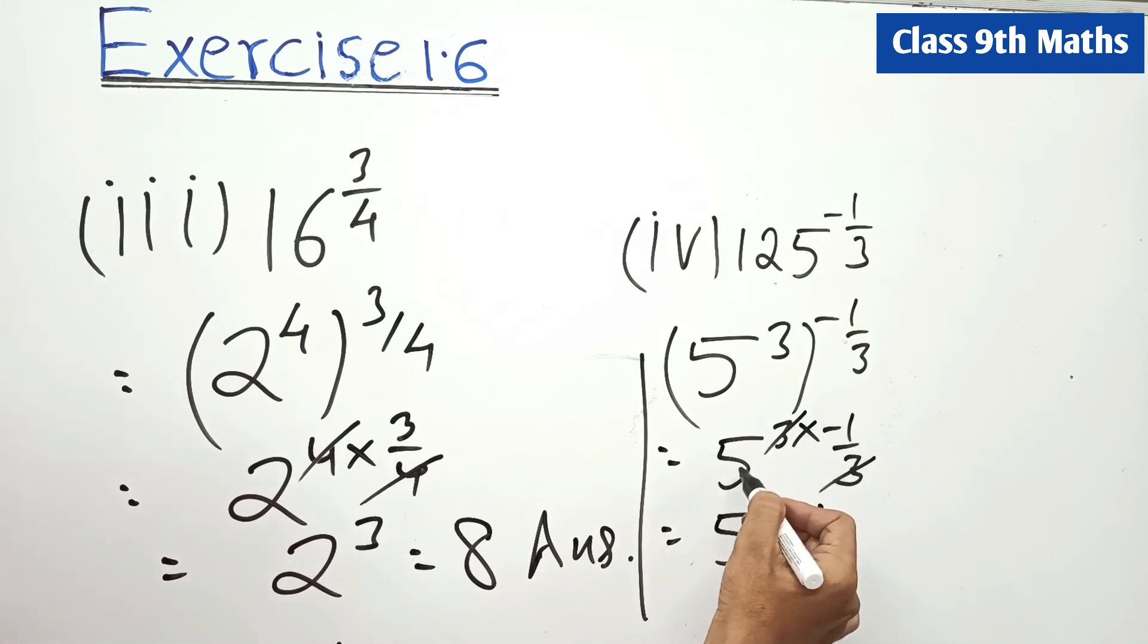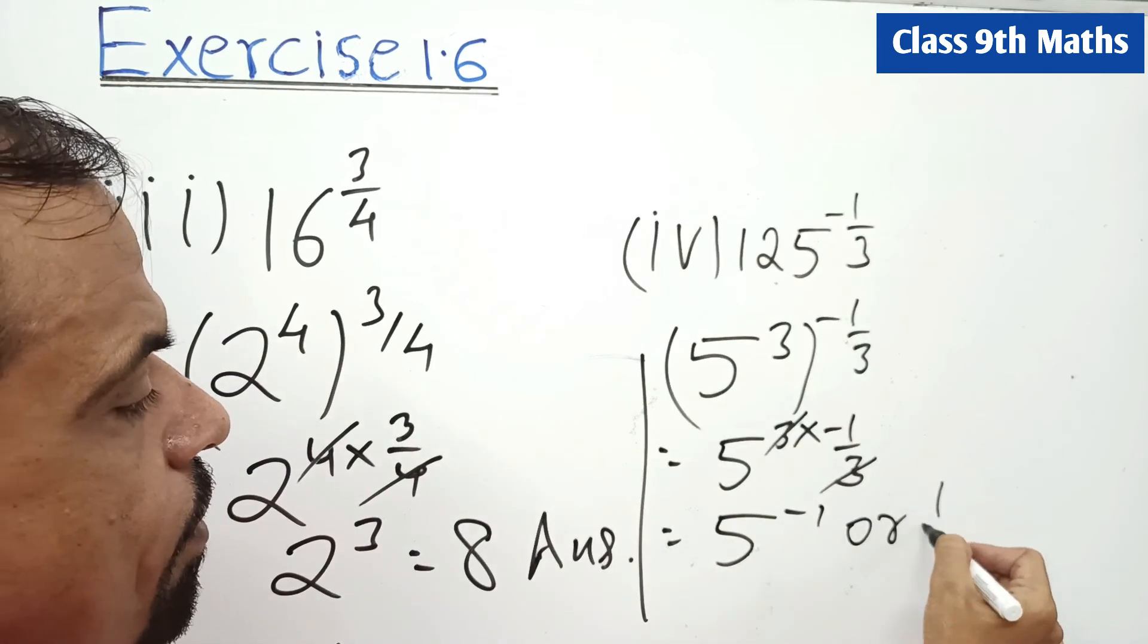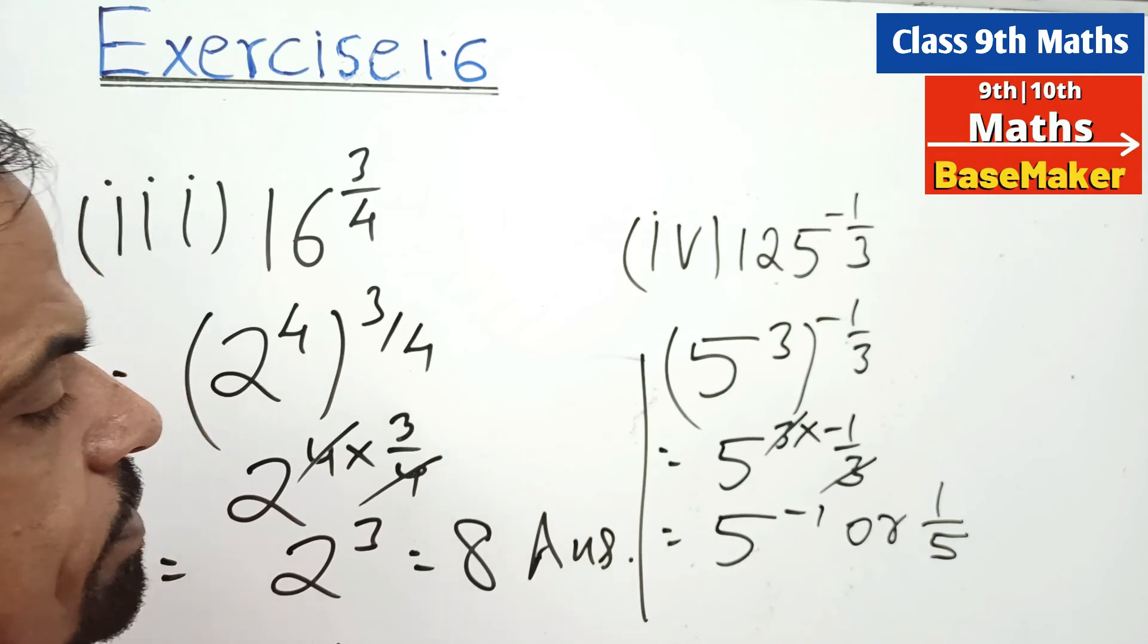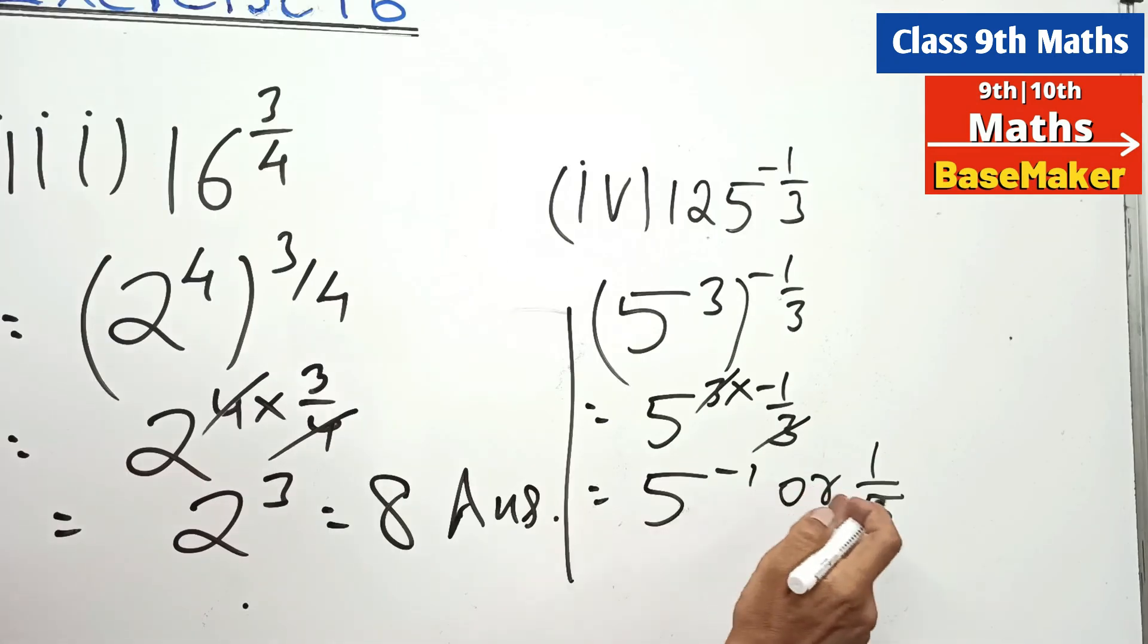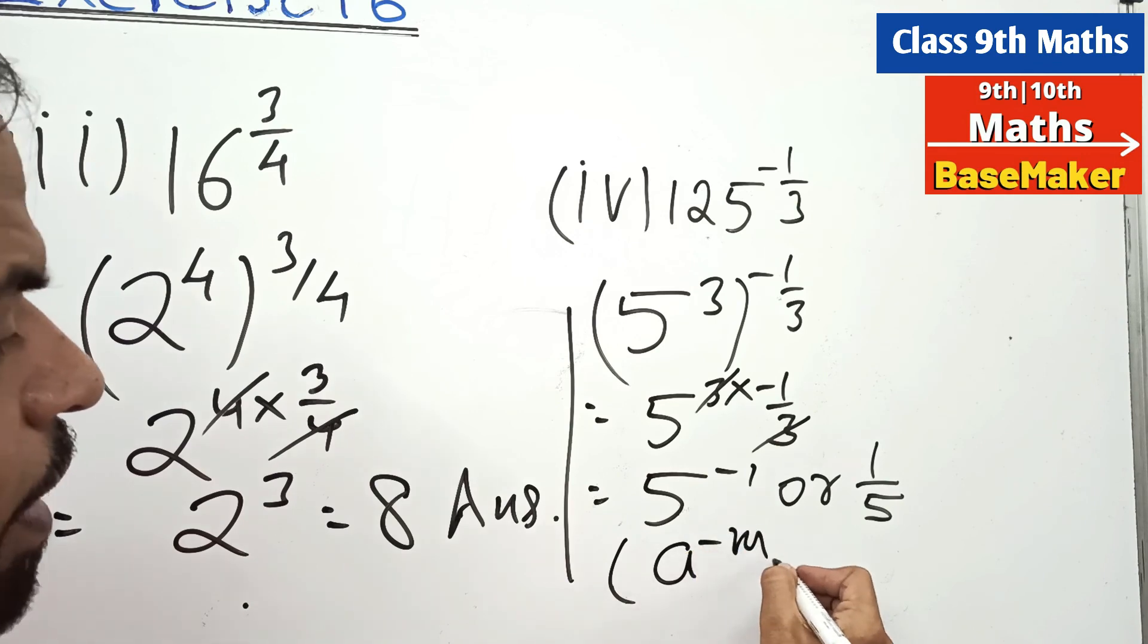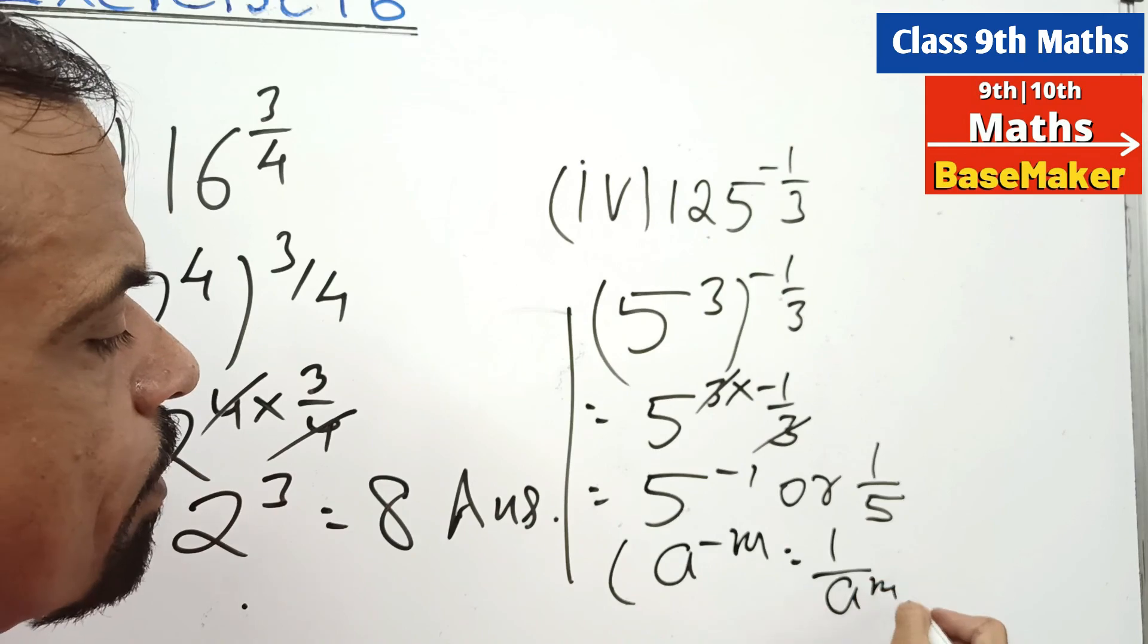Minus 1 here. If plus, then 5 to the power 1 or 5, but it's minus, so 5 to the power minus 1. Now we will take this as one upon 5. Using the law a to the power minus m is equal to 1 upon a to the power m.